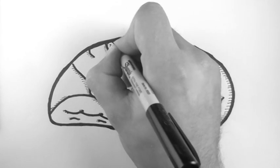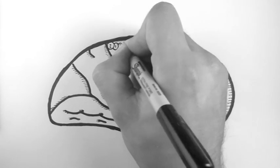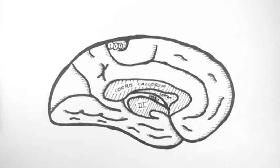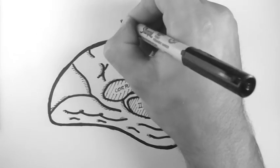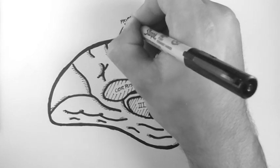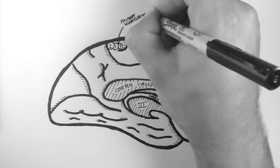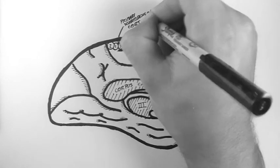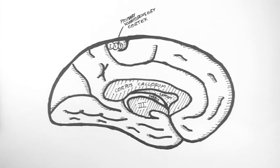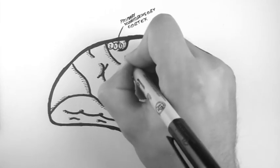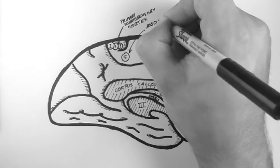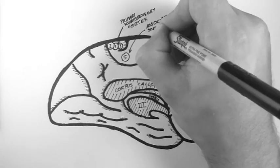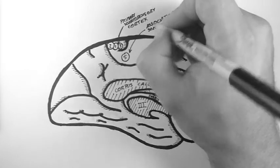Now up here, we have the primary somatosensory cortex. So that's Brodmann areas 2, 1, and 3. And we saw this on the lateral aspect of the brain. And so here it is wrapping over onto the medial aspect. Here we have Brodmann area 5. And that's the association somatosensory cortex.